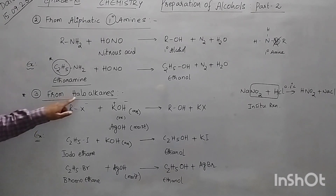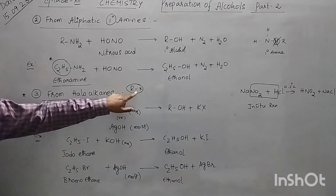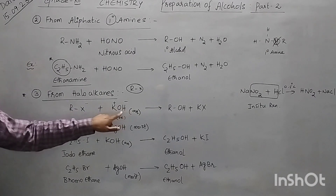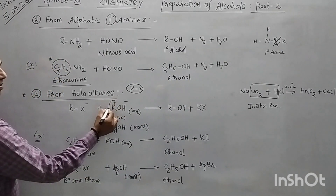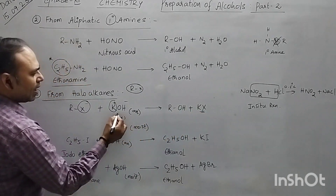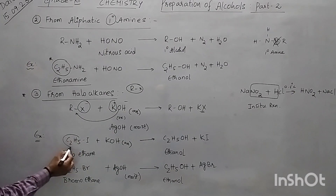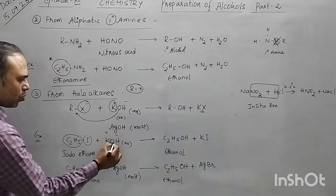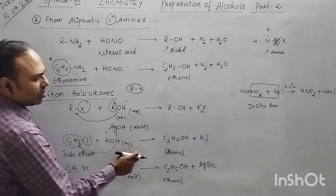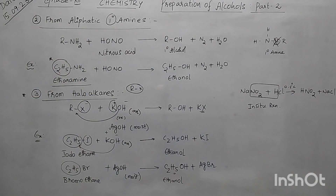The third method of preparation is from haloalkanes. You know what haloalkanes are — RX — where one hydrogen from an alkane is replaced with a halogen. Taking RX in the presence of aqueous KOH or moist silver hydroxide, you will get a primary alcohol and KX. The OH minus combines with the R group to get the alcohol. For example, iodoethane: OH minus combines with C2H5 to give ethanol. Similarly, taking the second method with moist AgOH, take ethyl bromide or bromoethane and you get ethanol.